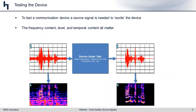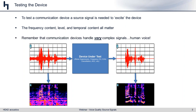What this webinar is really about is the type of stimulus signal we can use, because we can't just throw any signal at a device and expect appropriate behavior. We have to consider not just the frequency content and level, but also the temporal content of the signal. Communication devices are designed to handle extremely complex signals — human voice — not mechanical systems where we look for resonant frequencies using pure tone stimuli.